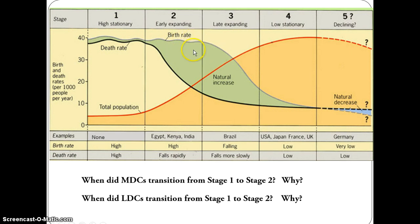When MDCs move into Stage 3 — mostly in the early 1900s up until about the 1950s and 1960s — the birth rate begins to drop, particularly as people move into urban areas. As they move into cities, children can no longer be sent out to gather food; instead they're sent to school. Because of that, they're not providing food for the family — they're actually demanding food from the family. So you have to be that much more productive to provide for your children.